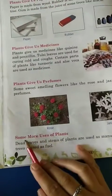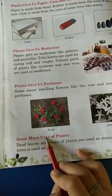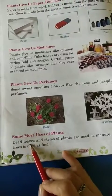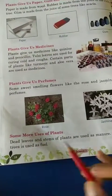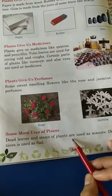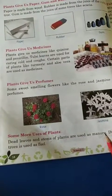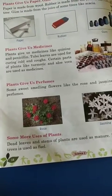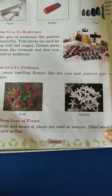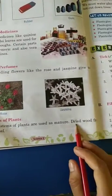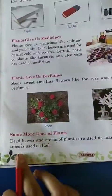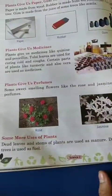Some more uses of plants: dead leaves — 'sookhi pattian' — and stems of plants can be used as manure. Dried wood from trees can be used as fuel. From the seeds we can also make use of plants.